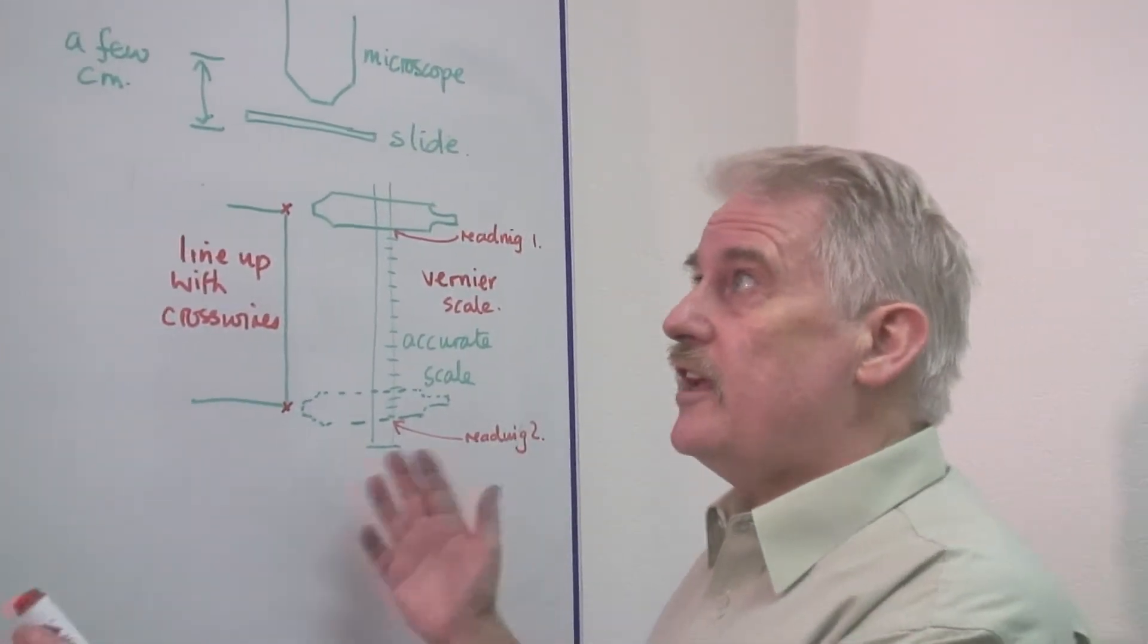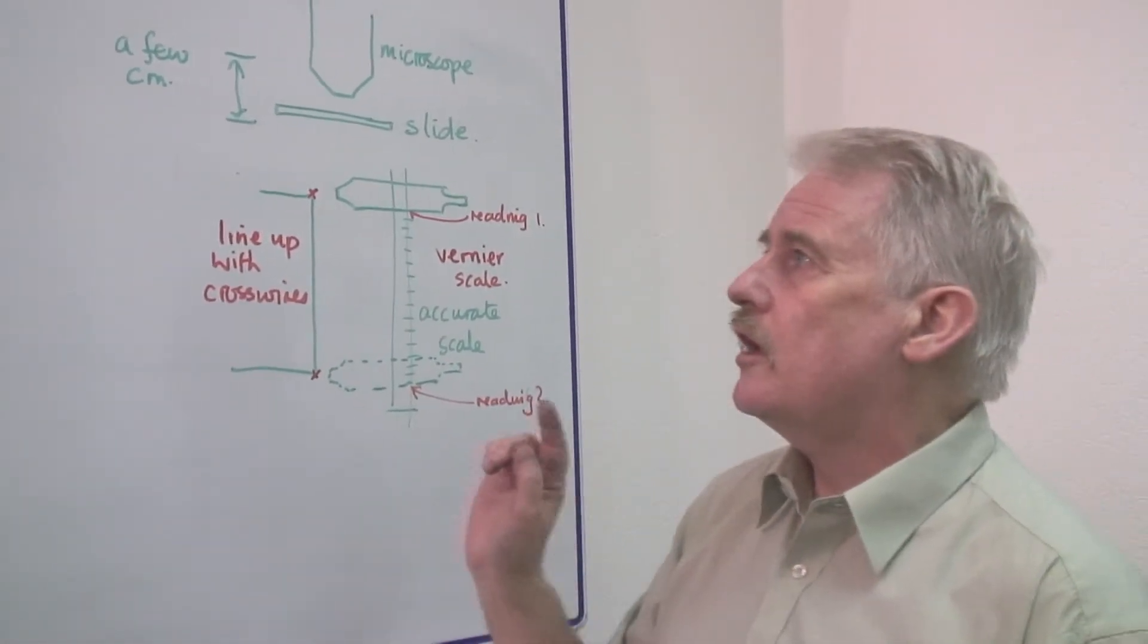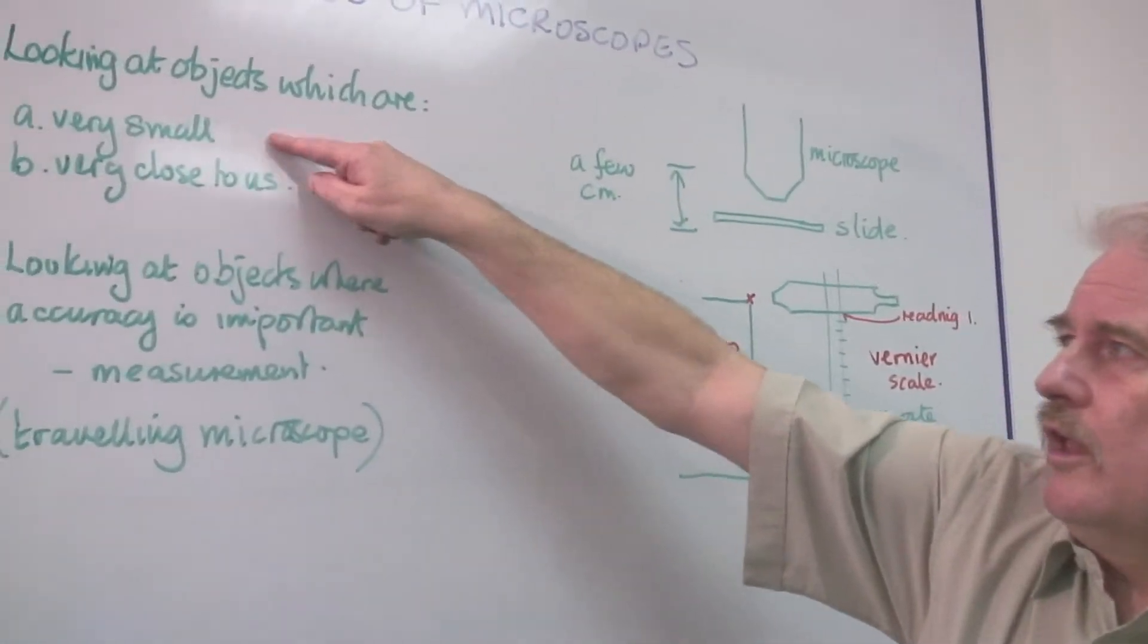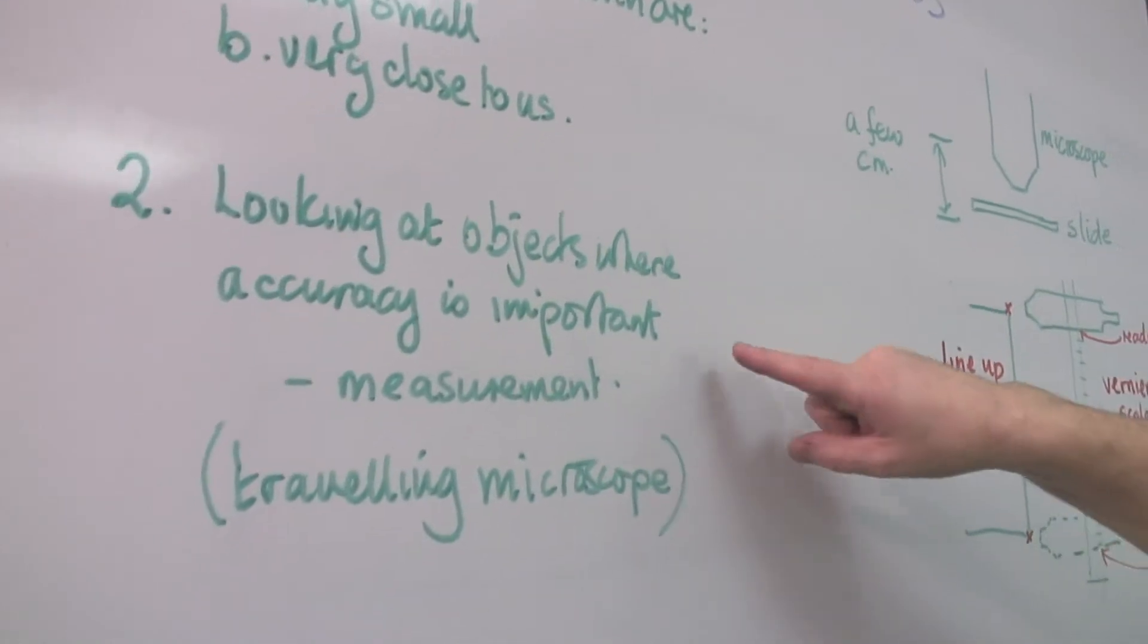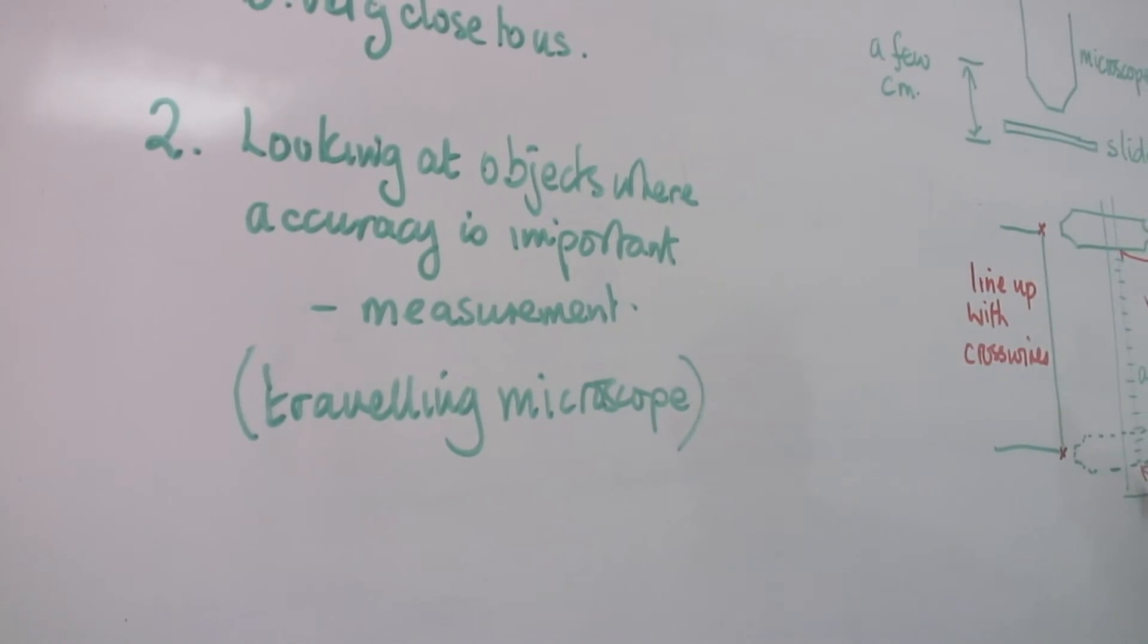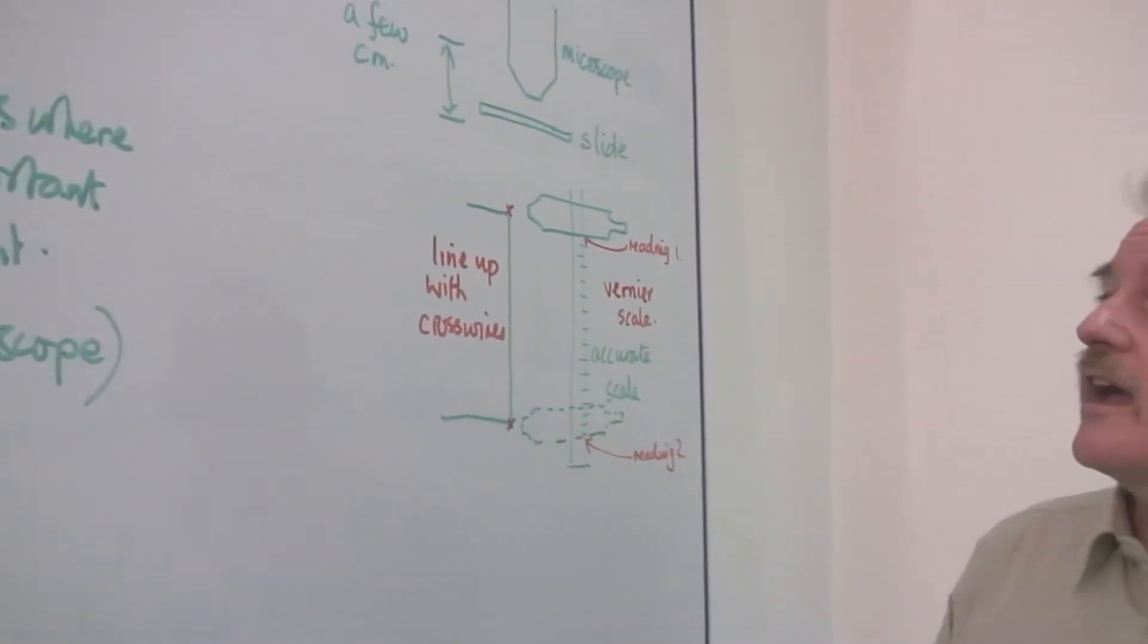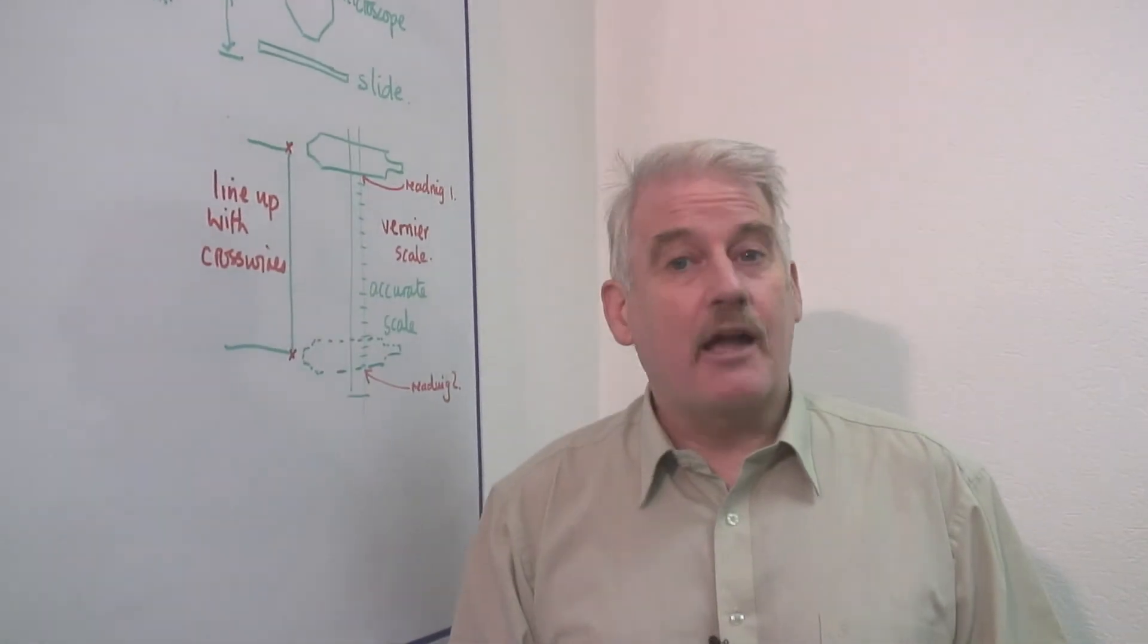So these are two types of microscope. They both use the microscope for viewing objects which are small and quite close to us. The only difference being that the travelling microscope is used to actually measure distances between one object and another. So that is basically the uses of microscopes.